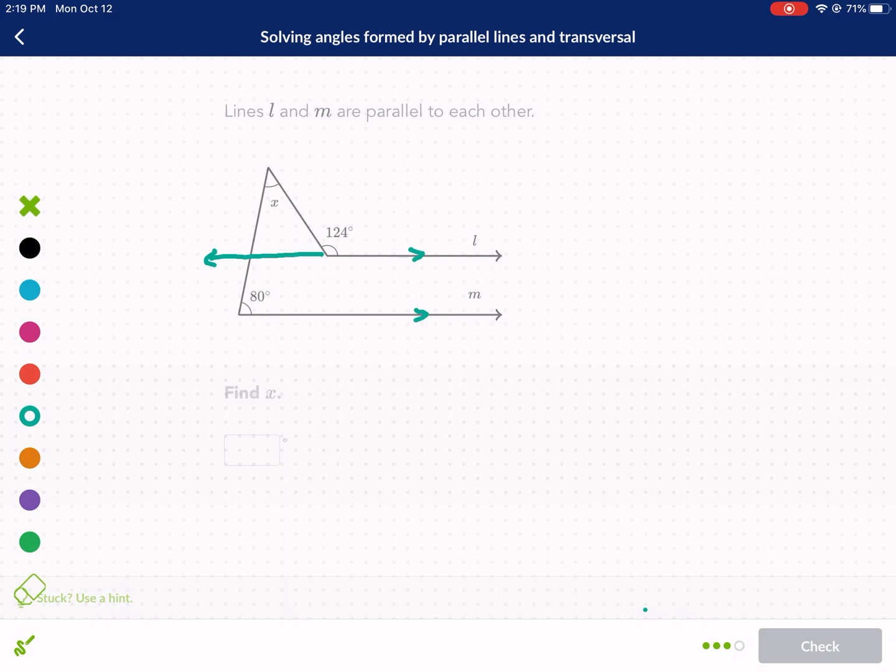If we have parallel lines, then we got a couple things going on. We have a transversal here, that creates some angles, it creates corresponding angles, that means that's the same part of the intersection, we have two intersections, one here, and one here. And these blue angles are in the same part of the intersection that makes them corresponding. So we have 80 degrees. Now, the other thing we have going on here is we have 124. 124 is got to be supplementary with this angle here. So 180 minus 124 will give us that angle. 180 minus 124 gives us 56. So this angle right there is 56.